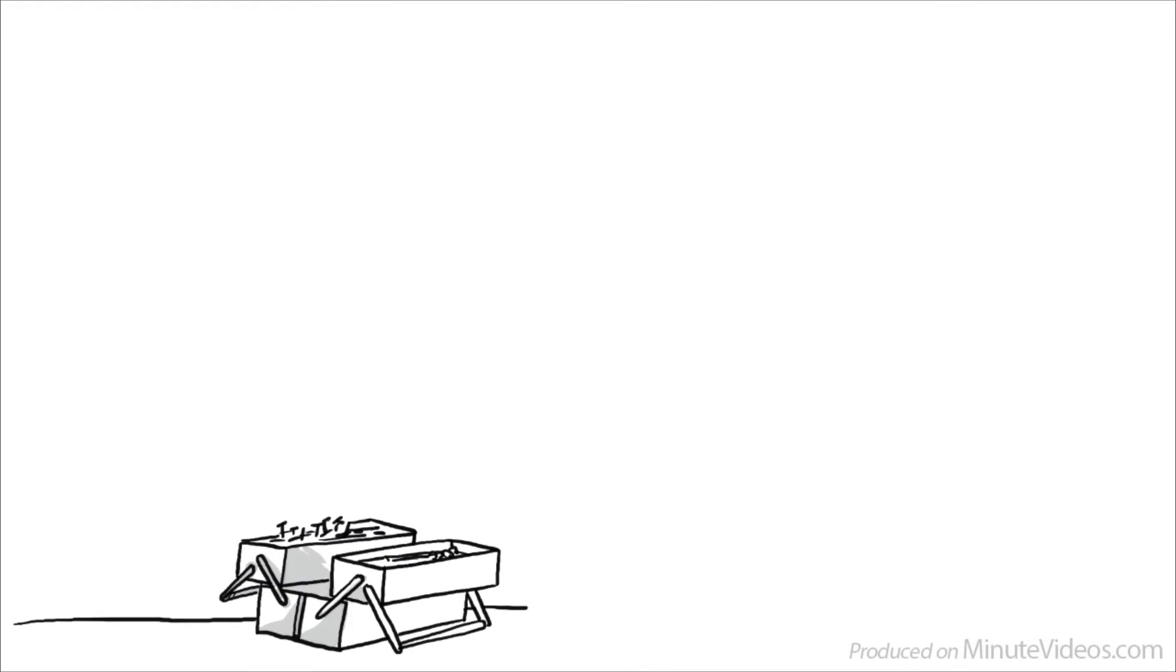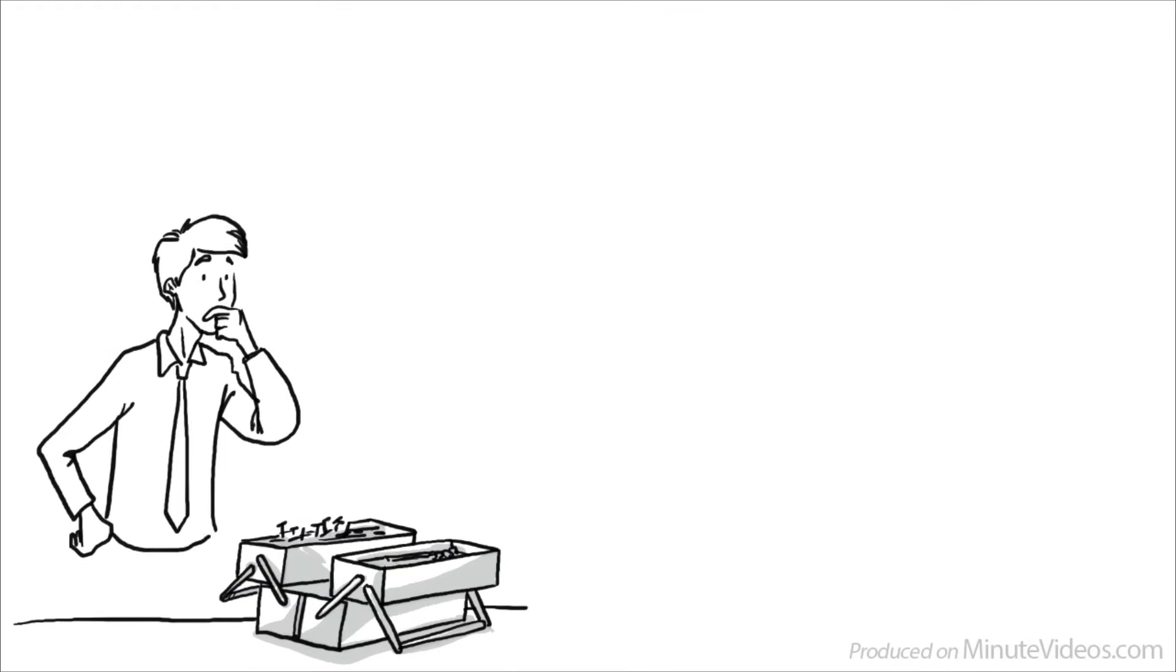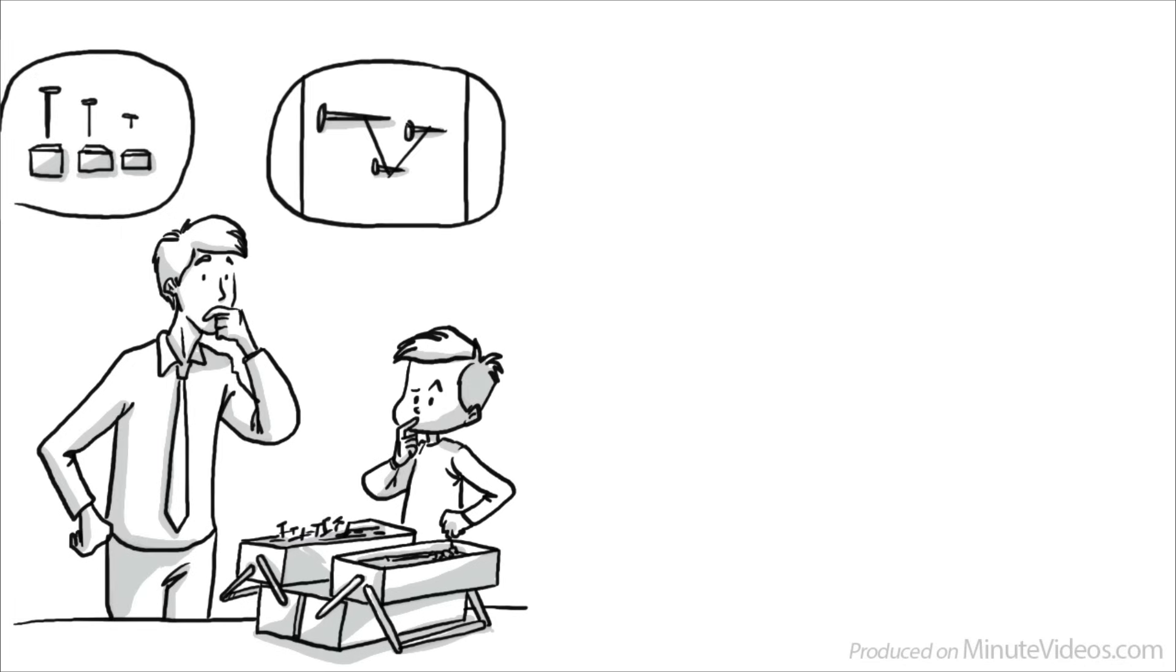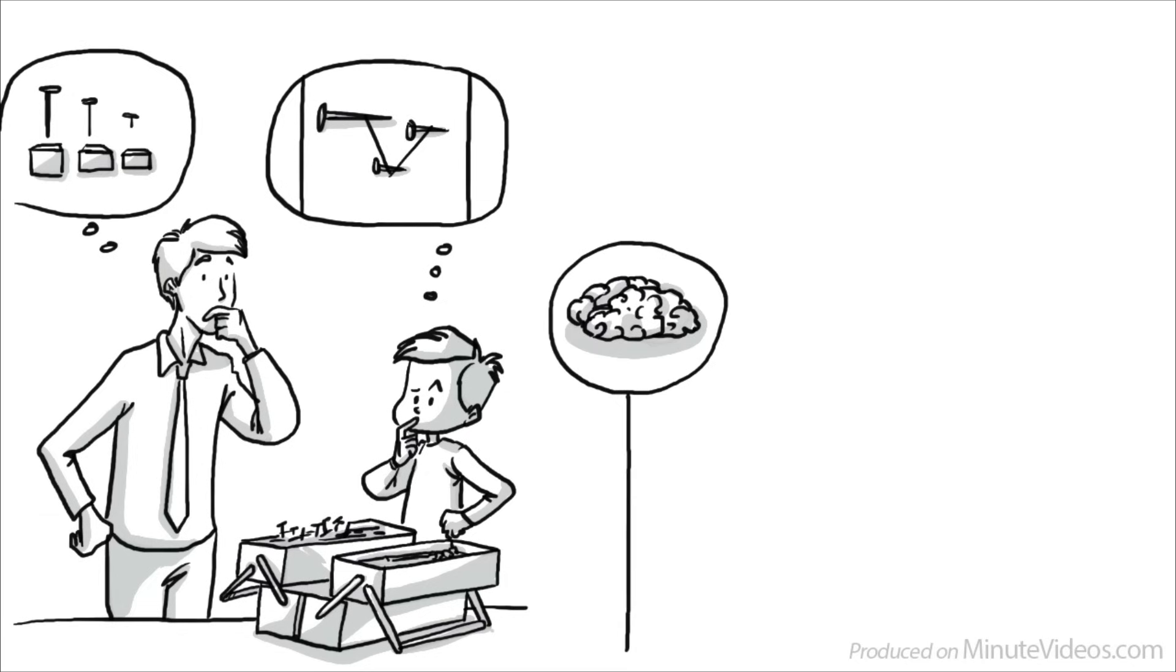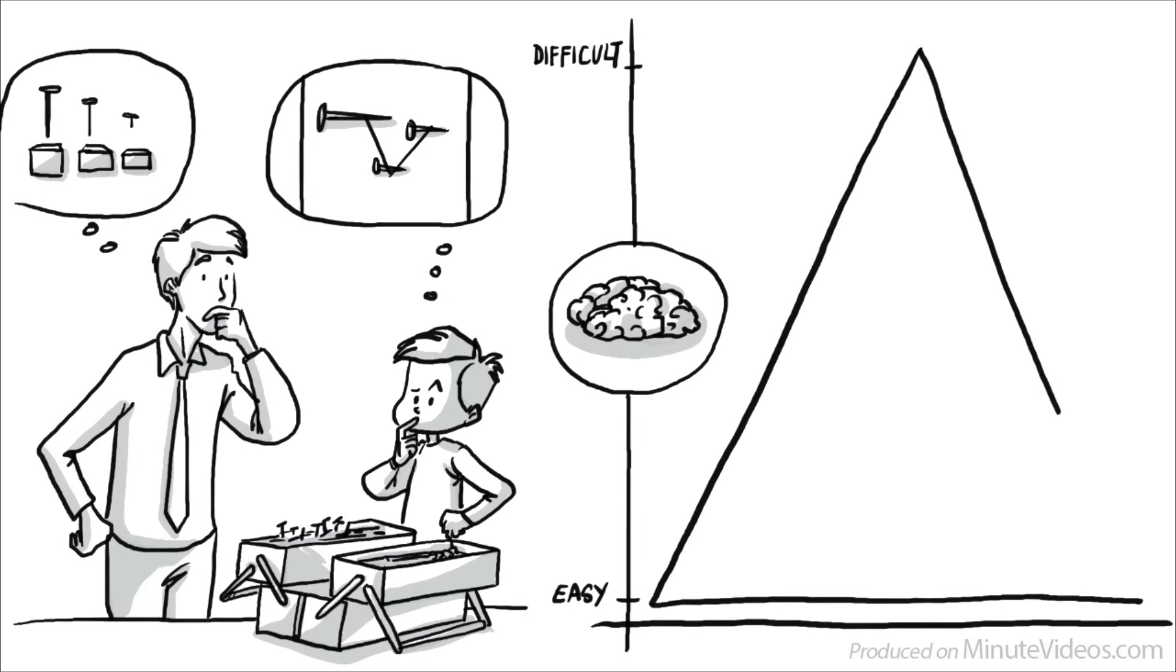Bloom's Taxonomy is a toolbox that teachers or students can use to classify and organize learning objectives. Its most popular version is based on the cognitive domain and assumes that learning should be structured from easy to difficult in the following six steps.